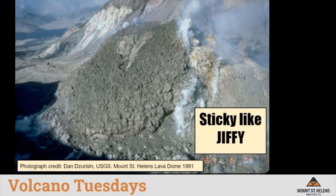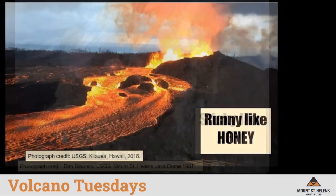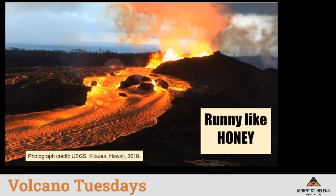Here is a picture of what 'sticky like Jiffy' lava actually looks like. This is lava erupting from the lava dome at Mount St. Helens, taken in 1981. Notice how thick and sticky the lava is coming out of the dome. In contrast, here is a picture of lava that is classically runny like honey — photographed in Hawaii in 2018. Notice how the lava flows easily and makes textures similar to what we saw with the honey.